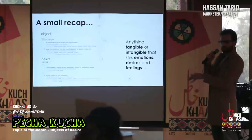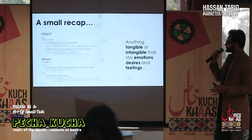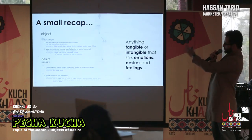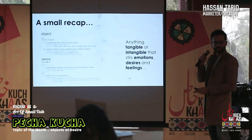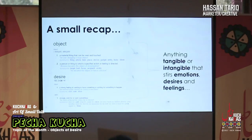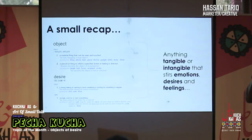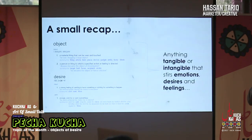Before we actually delve into things, I'd like to talk about objects of desire. I got a screenshot of the definitions of those keywords — object and desire. Object: a material thing that can be seen and touched. Desire: a strong feeling of wanting to have something or wishing for something to happen. Combining that, in my view, that would entail anything tangible or intangible that stores emotions, desires, and feelings, as Furkan touched upon through the element of design.